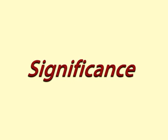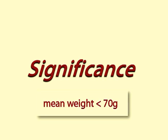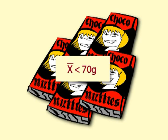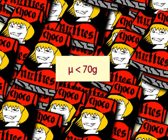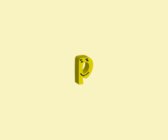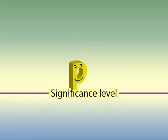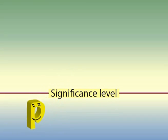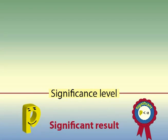Significance. When a result is statistically significant, this means that there is evidence that the effect we have observed in the sample exists in the population. The p-value tells us if a result is significant or not. A p-value lower than the significance level tells us that the result is significant — it is unlikely to have occurred as a result of sampling error.